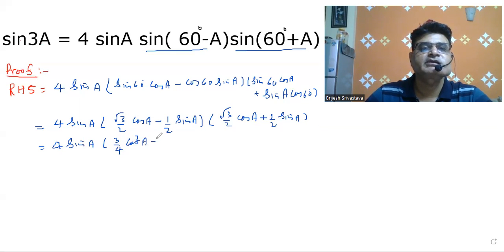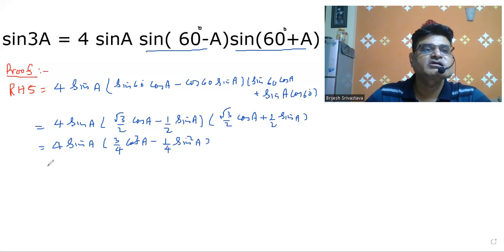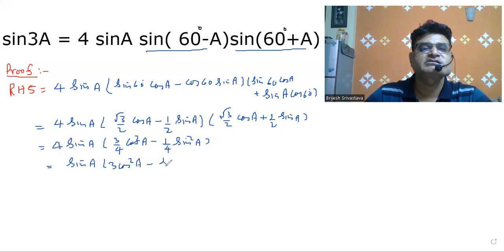After multiplying out, we get 4 times sin A into the expression: cos²A terms and sin²A terms, and the 4 cancels, leaving sin A into 3 cos²A minus sin²A.